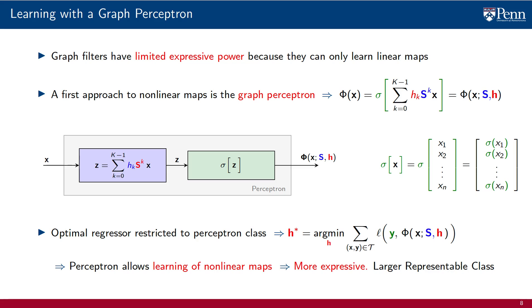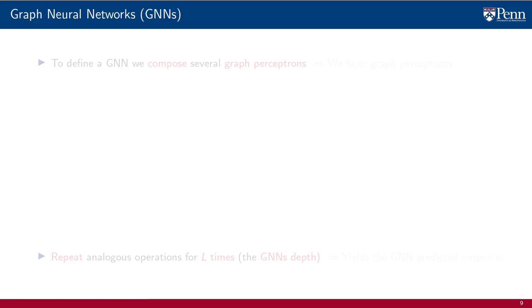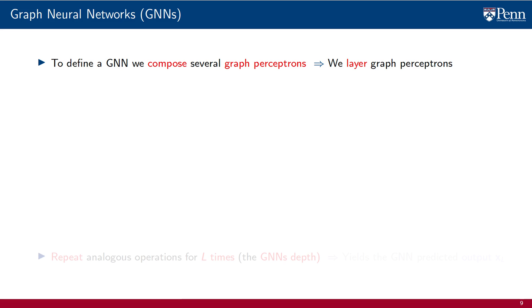Although we have emphasized the conceptual proximity of filters and perceptrons, there is a substantial difference. The addition of the nonlinearity allows the perceptron to learn nonlinear maps, rendering the model more expressive — it can represent a larger set of functions. The quest for further increases in expressive power is what leads to the introduction of graph neural networks. To build more complex nonlinear functions, a GNN composes several graph perceptrons — it stacks perceptrons, layering a set of perceptrons.